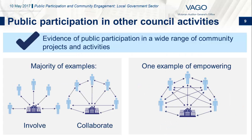We looked at a wide range of council community projects and activities where public participation was evident. We saw a two-way flow of information and the sharing of information within and between stakeholder communities during the decision-making process. We also found one example of empowering the community when the community was given the opportunity to consult on a funding allocation and decide how it would be spent. It is very positive to see that public participation for community projects was being conducted at the involve, collaborate and empower end of the spectrum.